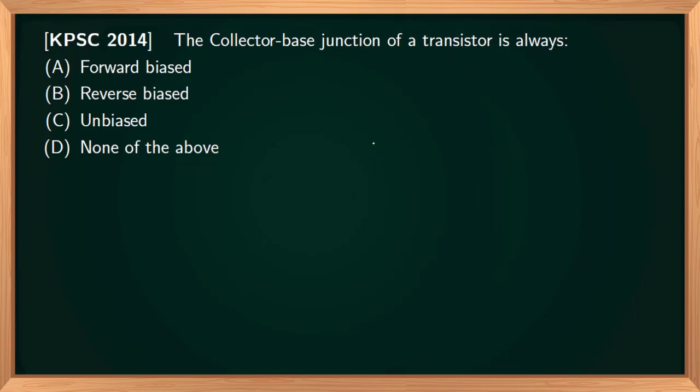The emitter junction is forward biased and the collector junction is reverse biased. There will be two junctions: emitter junction Je and collector junction Jc, base emitter and collector. This junction is forward biased and this junction is reverse biased. For proper operation as an amplifier, emitter junction is forward biased and collector junction is reverse biased. So the correct option is Option A.